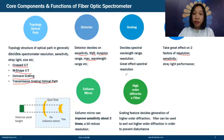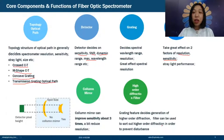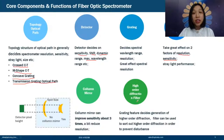The sixth component is the high-order diffraction filter. Gratings inherently generate higher-order diffraction. Filters are used to sort out these higher-order diffractions to prevent measurement disturbance. We will have a more detailed introduction on this later.